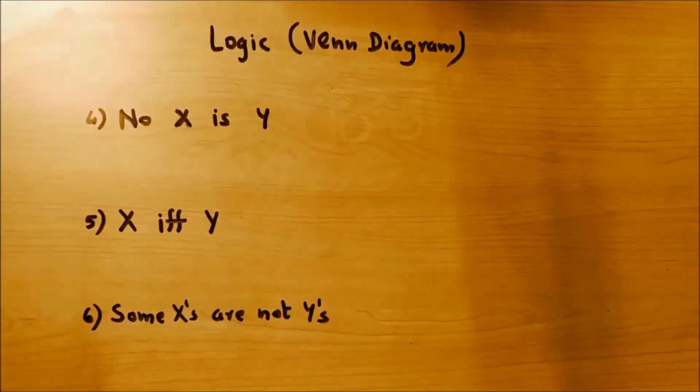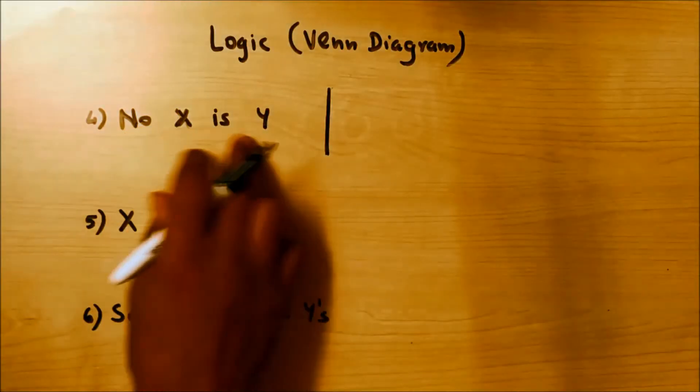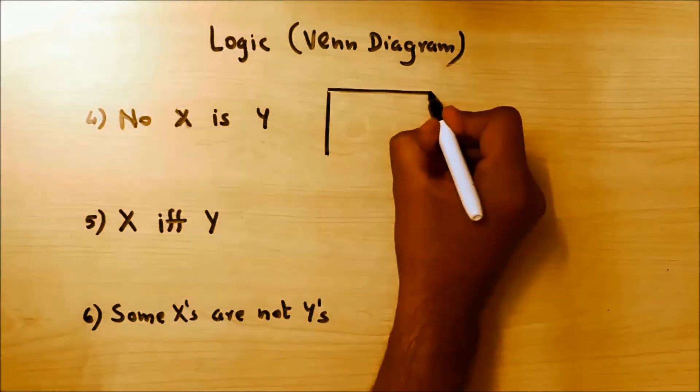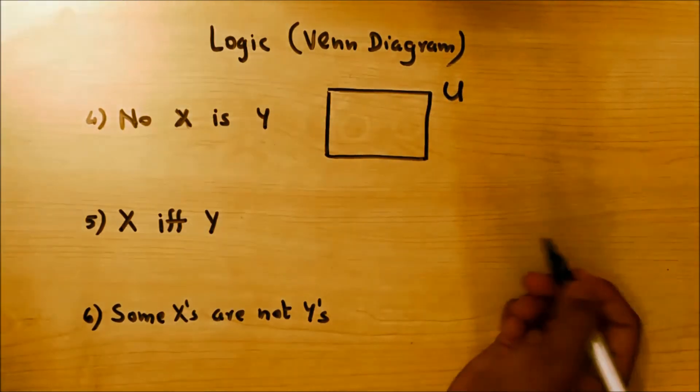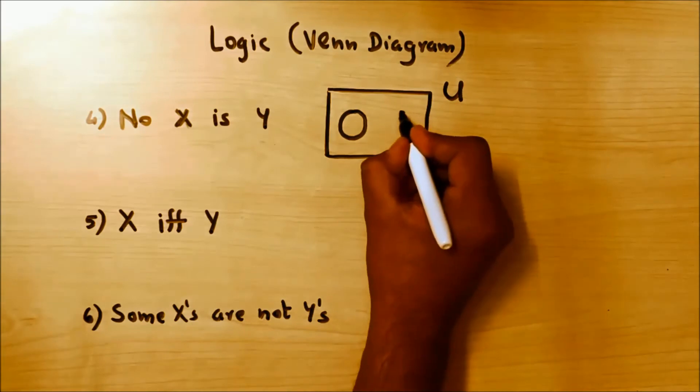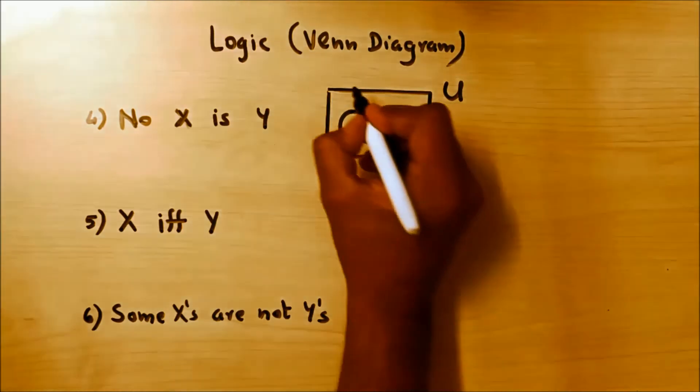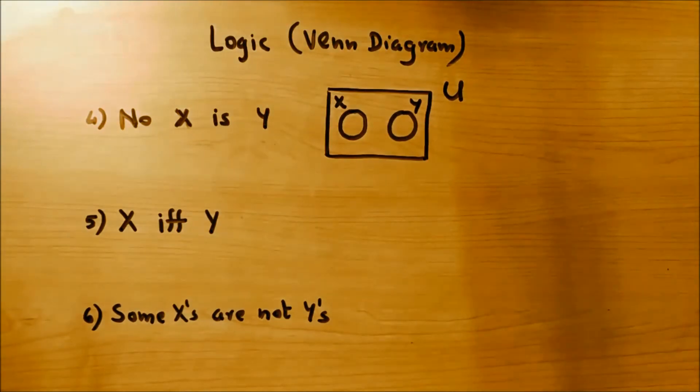The fourth one is no X is Y. We have set U, the universal set. None of the X's are Y's, so both the sets are disjoint—there's no connection between the two. None of the X is Y.